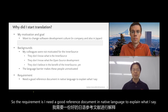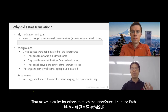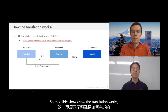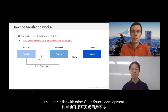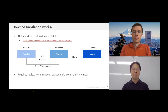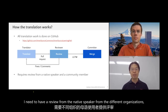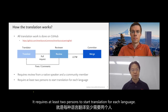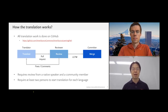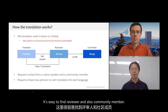The requirement is I need a good reference document in a native language to explain what I mean. That makes it easier for others to read the InnerSource learning path. All translation work is done on GitHub in an open source way — it's quite similar to other open source development. But there is one difference: when translating articles, you need to have a review from a native speaker from a different organization, and also a community member. That means it requires at least two persons to start a translation for each language. But please don't worry — InnerSource Commons is a very nice community with members from all over the world, so it's easy to find a reviewer and a community member.